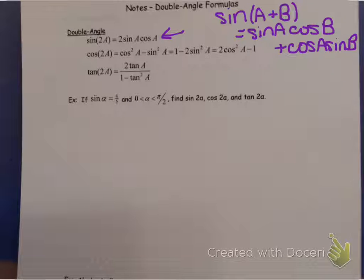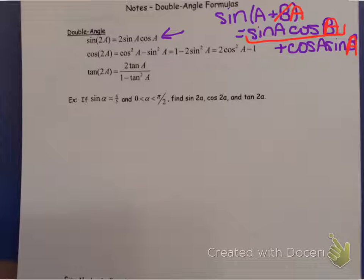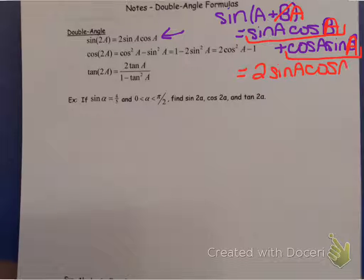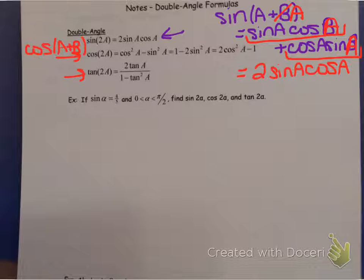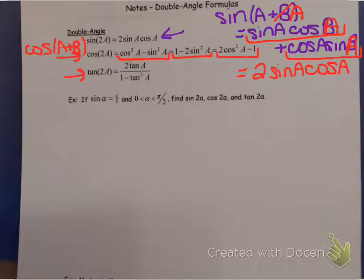All they did was take angle B and make it angle A again - making the two angles the same size. That would replace B with A throughout, so they had sine A times cosine A plus another sine A times cosine A. Those became like terms and added to give two sine A cosine A. They did the same thing for cosine, starting with cosine of A plus B and changing to A plus A. Same thing with tangent. The additional step was taking the first identity and deriving the other two versions by doing a single substitution step.